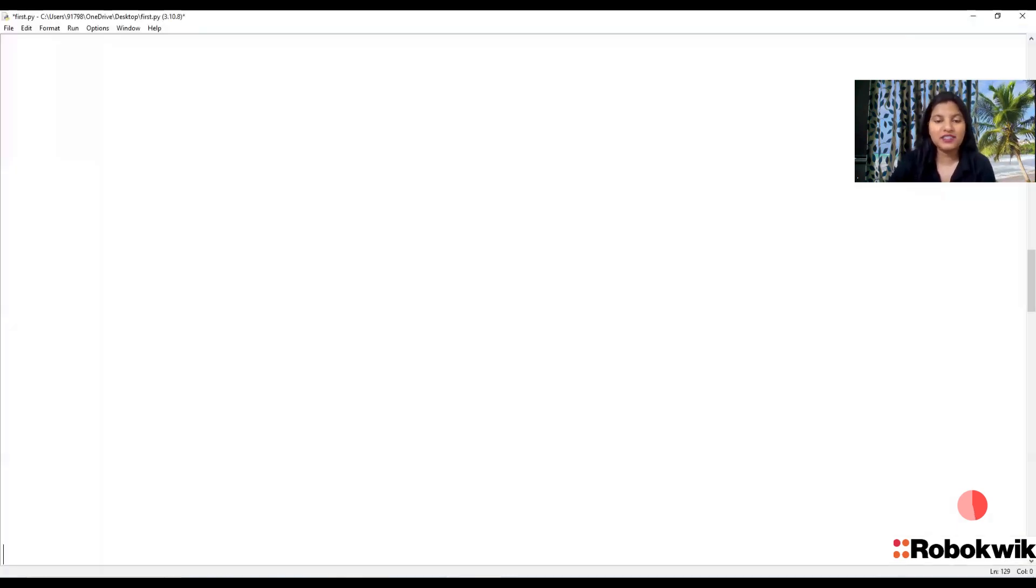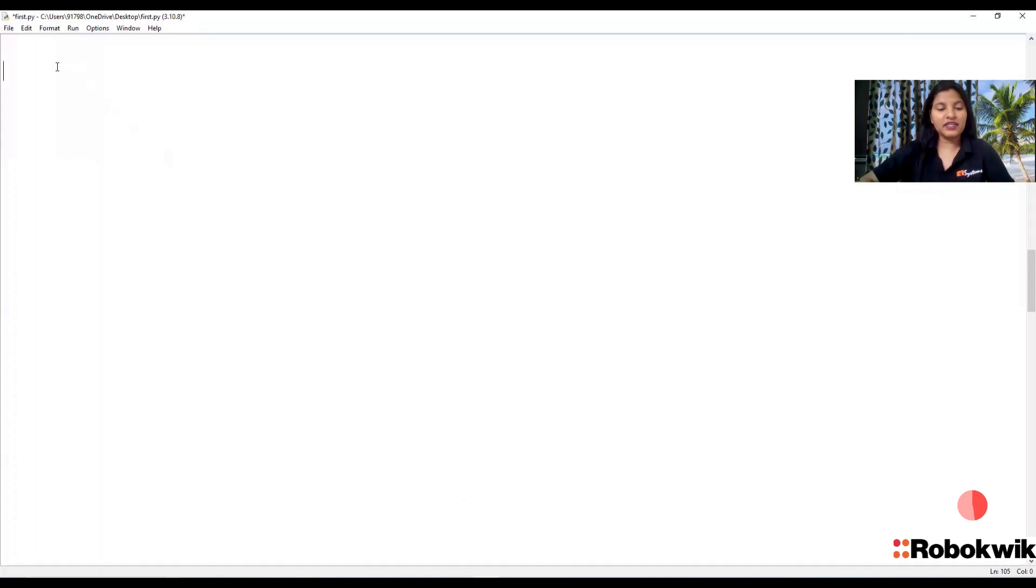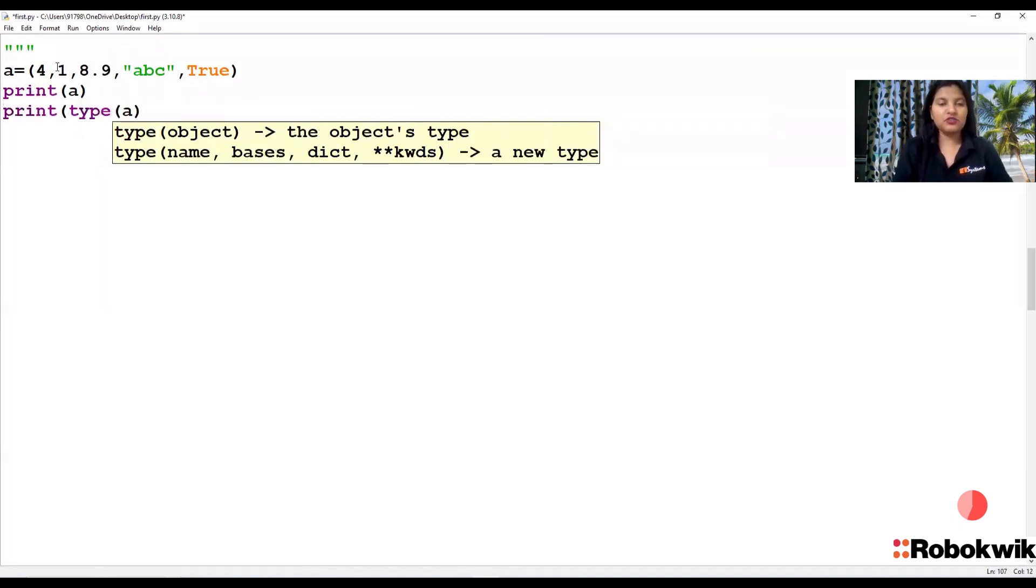Now, this same thing we are doing in programming. So we will use a variable to create a round bracket. Now, I think it is inside a tuple. A equals to round bracket. Now we will do 2, 4, 1, 8.9, A, B, C and true. You can store any different type of data, even same type of data. You can store any type of data. So first of all, we will print the value of A and I will print the value of A and type of A.